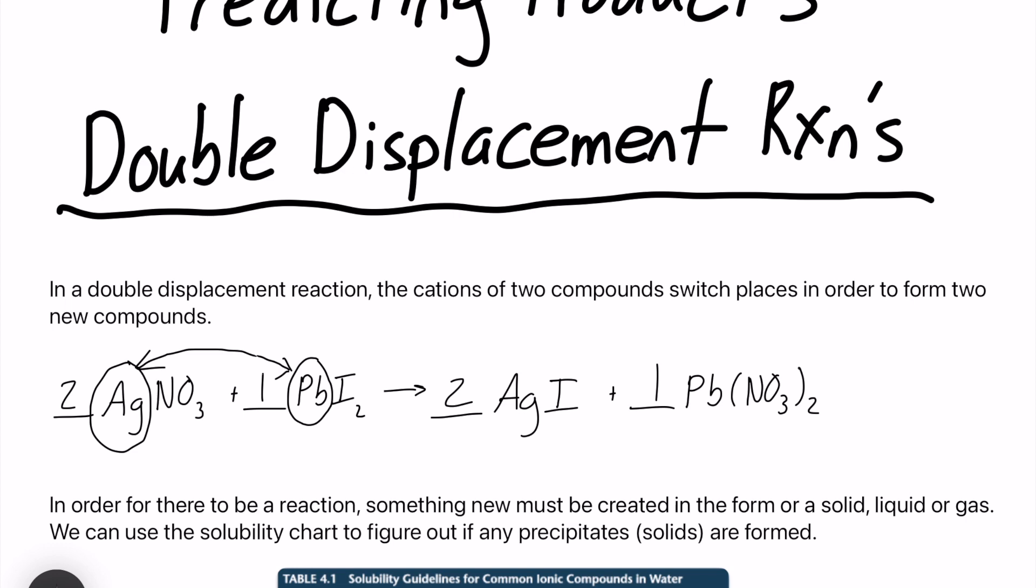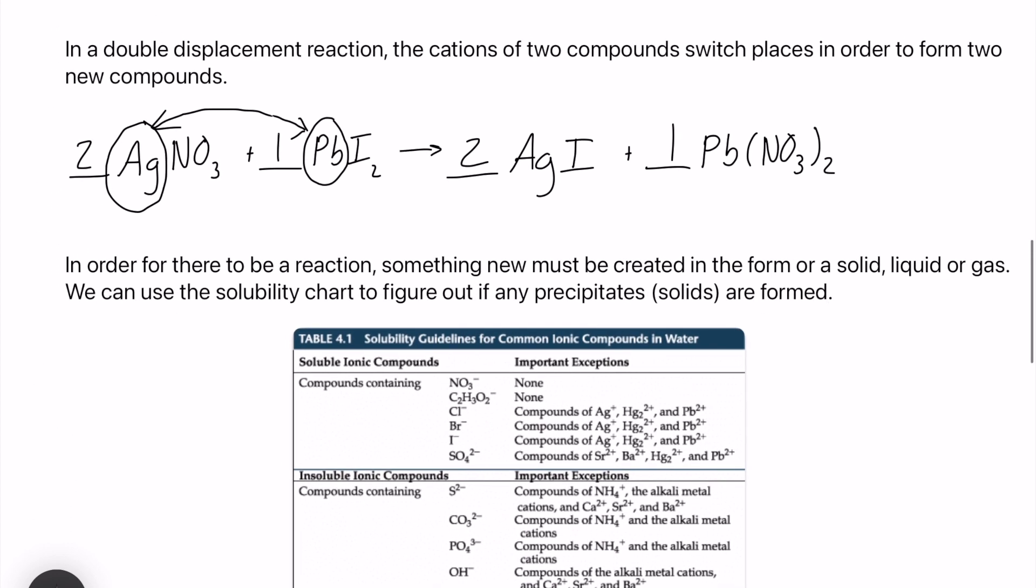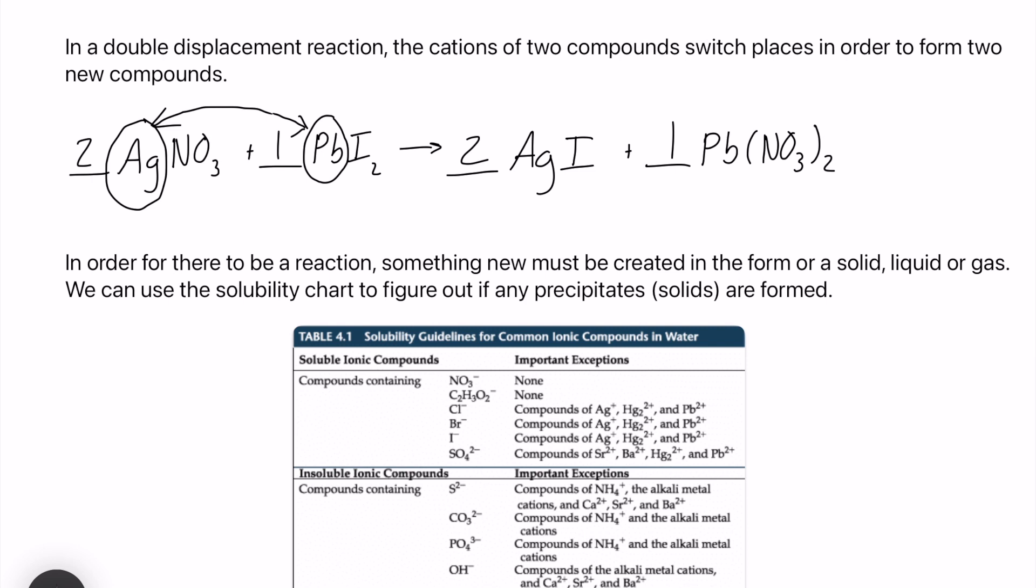So one more step here that we have to talk about. It says in order for there to actually be a reaction, something new must be created in the form of a solid, a liquid, or a gas. So we can use this solubility chart right here to figure out what is going to be soluble, what's going to form a precipitate or a solid in other words. But if nothing new is formed, if everything is soluble, there is actually not going to be a reaction.